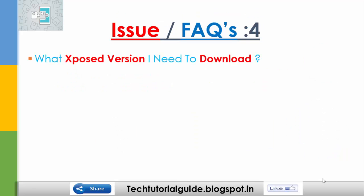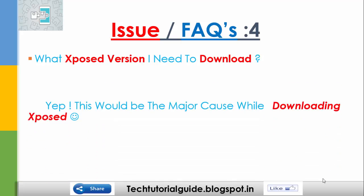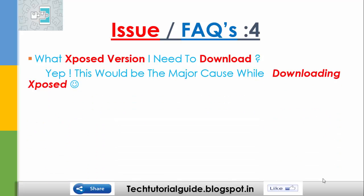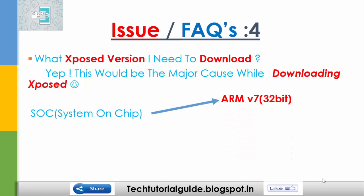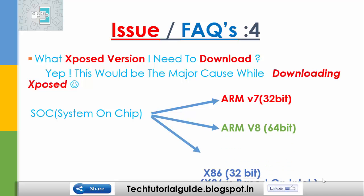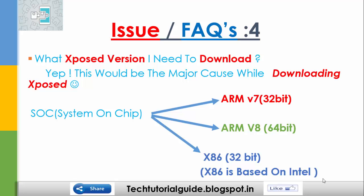A major cause of confusion is which Xposed version needs to be downloaded. SoC means System on Chip — that is known as the CPU of your Android device. There are types of CPUs like ARM version 7, ARM version 8, and x86. You must download based on your CPU version.